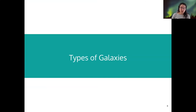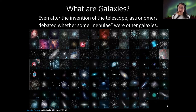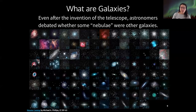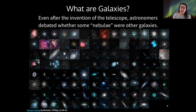When thinking about types of galaxies, the first basic question is: what are galaxies anyway? Even after the telescope was invented, astronomers didn't know whether other galaxies existed. A lot of astronomers thought the Milky Way was the entire universe and there was nothing outside of it. There were observations of objects on the sky that clearly were not stars, and these started to be cataloged by Charles Messier from France.